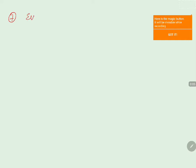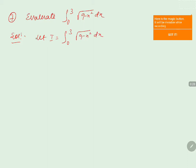The problem is to evaluate the integral from 0 to 3 of √(9 - x²) dx. The lower limit is 0 and the upper limit is 3. We'll assume the integral as I = ∫₀³ √(9 - x²) dx.